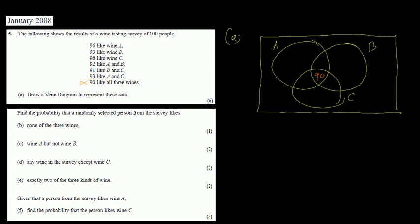The next value is A and C — A intersection C — which is 93. A intersection C covers this entire region. If this entire region is 93 and the center is 90, then this exclusive part should be 3.